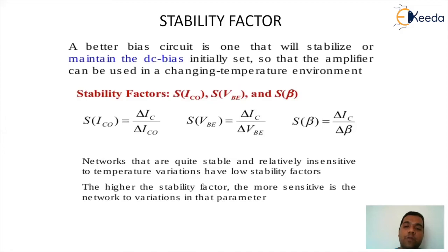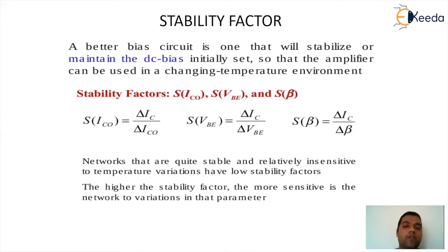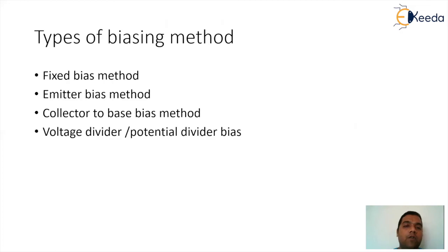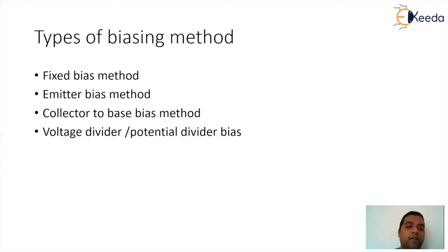The stability factor is a parameter used to interpret the stability of the circuitry — we want it to be as low as possible. Do not misinterpret it as a factor that improves stability; rather, it measures the degree of stability. To achieve the desired Q point position, we bias the transistor using different biasing methods. There are four types of biasing methods: fixed bias, emitter bias, collector-to-base bias, and voltage divider or potential divider bias method. These four biasing methods will be covered in the upcoming sessions. Thank you.